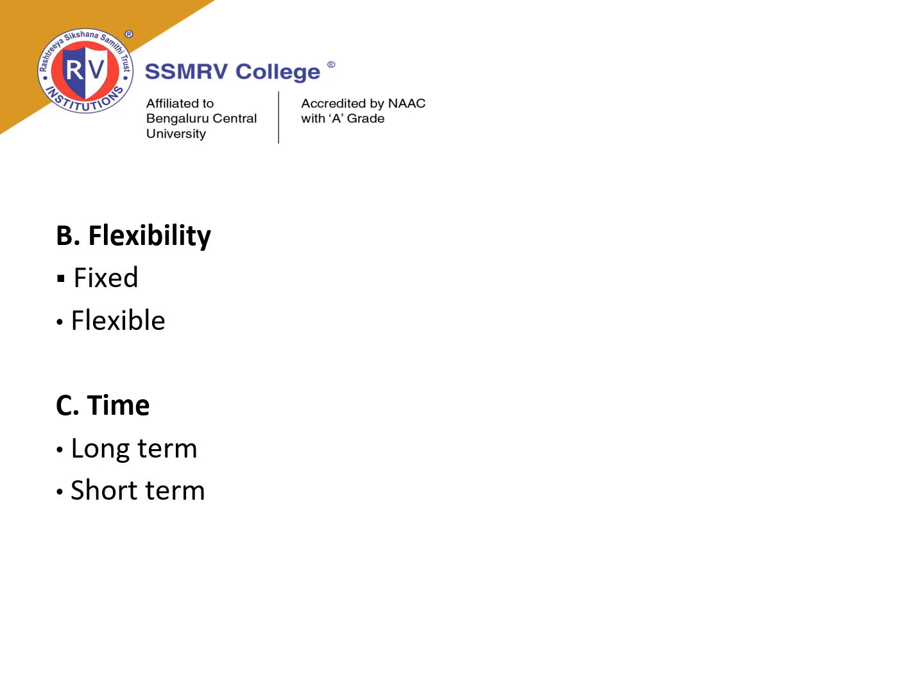Classification on the basis of flexibility: the first category is a Fixed Budget, suited to organizations where production is uniform and there is no deviation in production or cost. The second category is a Flexible Budget, which provides scope for changes in output or expenditure. Classification on the basis of time: a Long-term Budget is prepared for 5 to 10 years, while a Short-term Budget covers a period of 1 to 5 years.